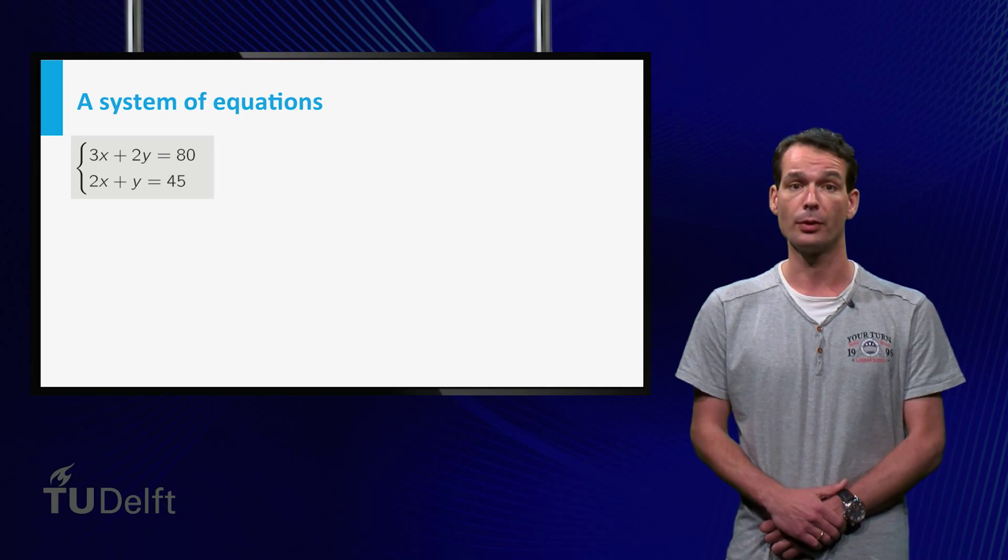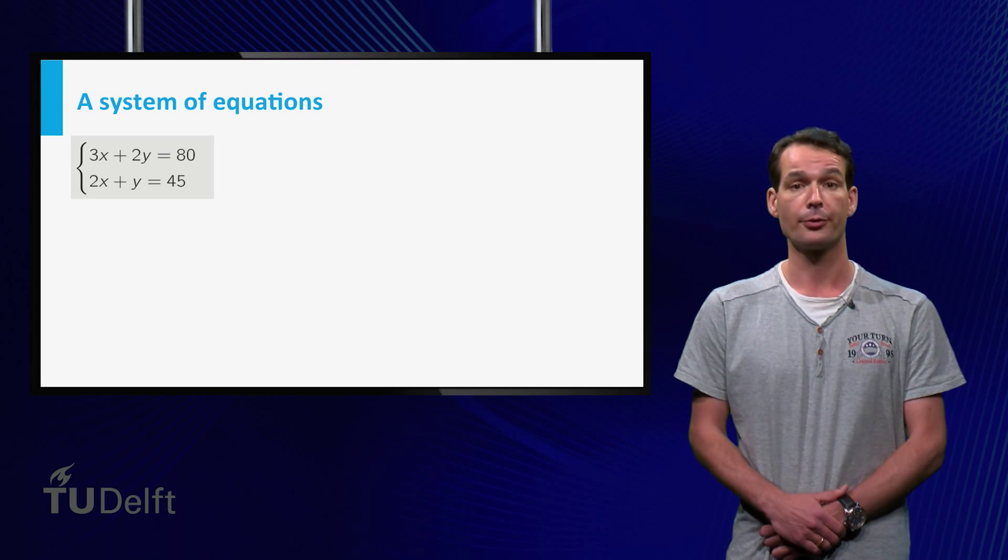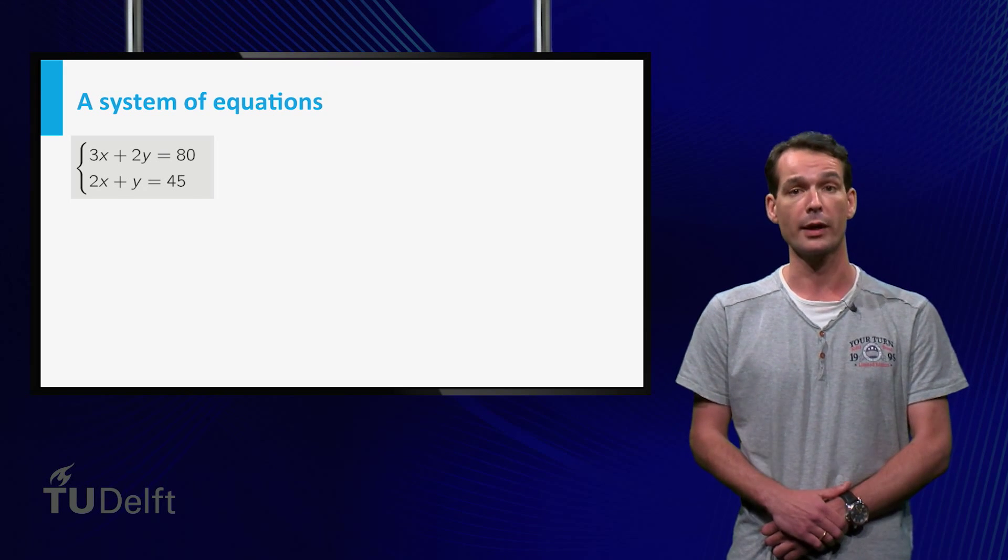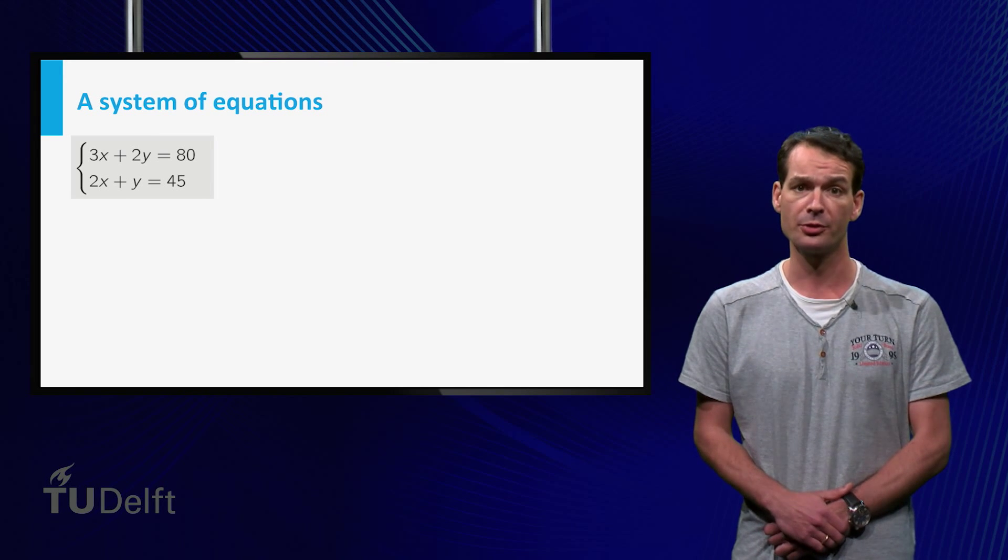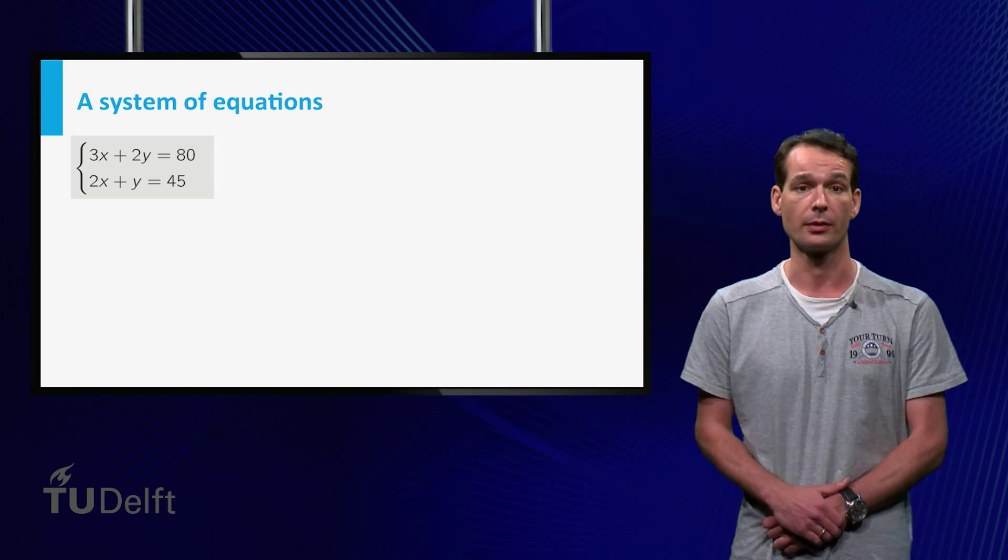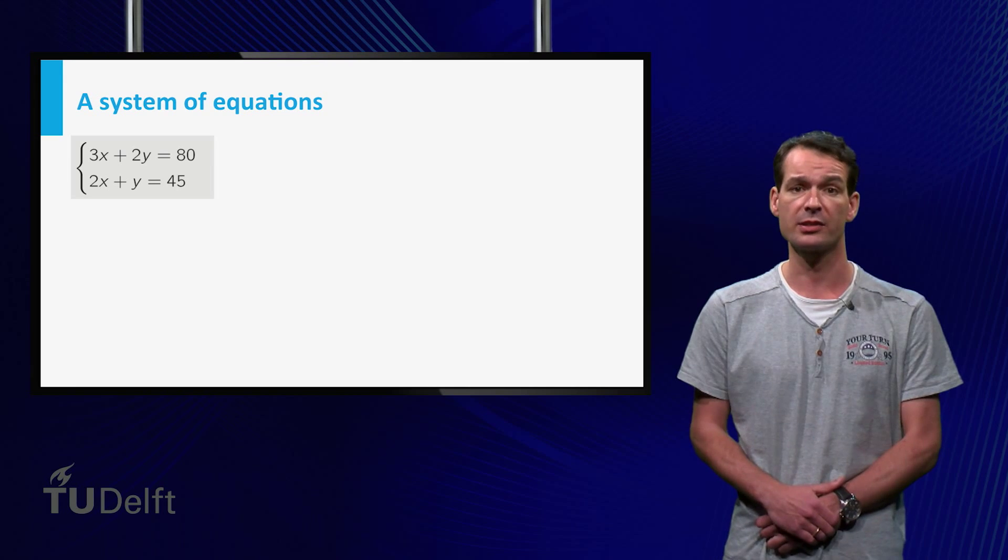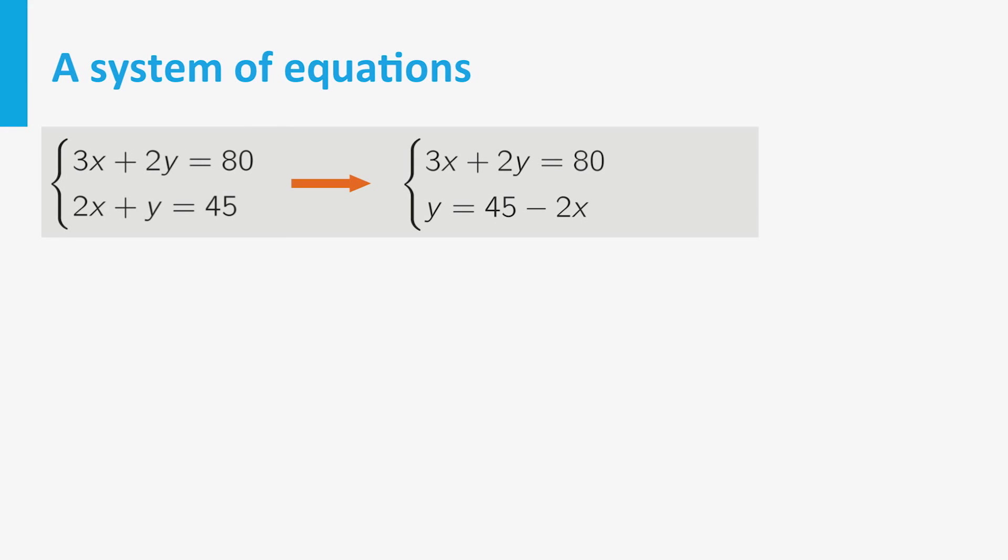In the previous example, with the line and the circle, the first equation was of the form y is equal to a function of x, and we could substitute this into the second equation. Here we can do something similar. We first solve the second equation for y, which gives y equals 45 minus 2x, and then substitute into the first one.